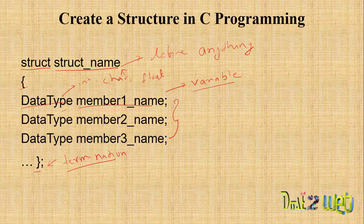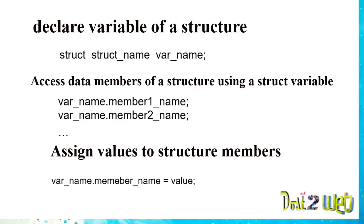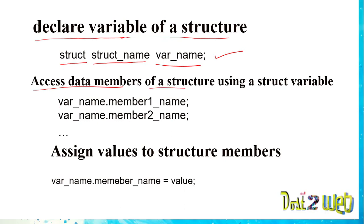Once you have created the structure, you need to declare the structure variables. To declare, you use the keyword 'struct', then the structure name you defined, then a variable name. After declaring the variable, you access the data members of the structure using the variable name followed by a dot operator and then the member name. You can access as many data members as you have defined.